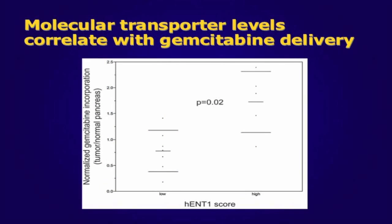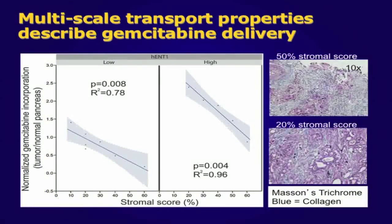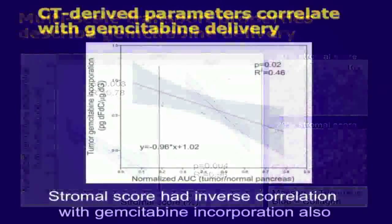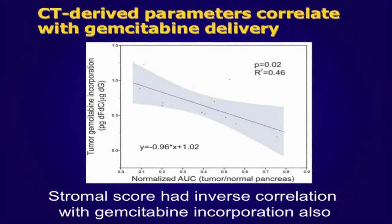When we scored the HENT1 staining in the tumor samples as either high or low, we found significant differences in gemcitabine incorporation. Furthermore, we found a significant inverse correlation between the amount of stroma in the tumors and the gemcitabine incorporation, but this correlation was only seen when the HENT1 was accounted for. Essentially, more stroma meant less gemcitabine delivery. But when you have low HENT1, this inverse correlation relationship was shifted downward, as one might expect. We also saw a direct correlation between the amount of stroma and the CT-derived transport properties, and just as stroma had an inverse relationship with gemcitabine delivery, so did the CT-derived property AUC.